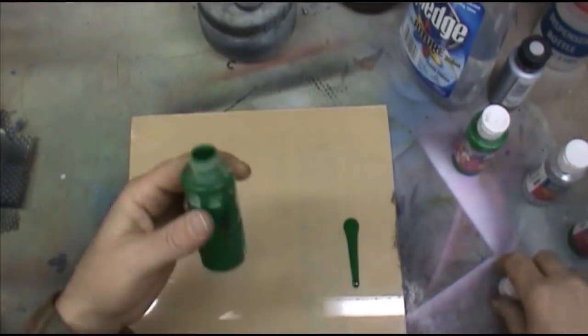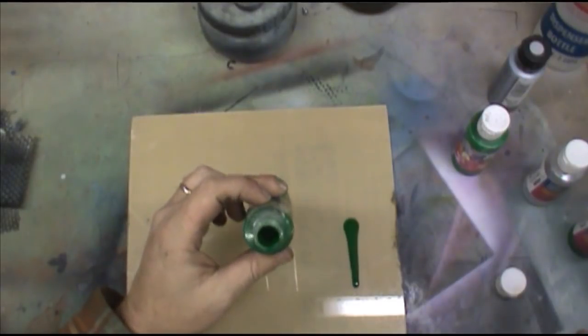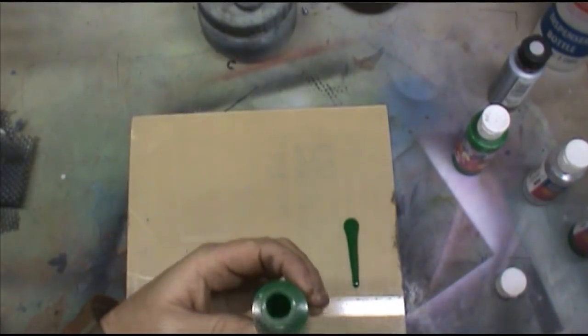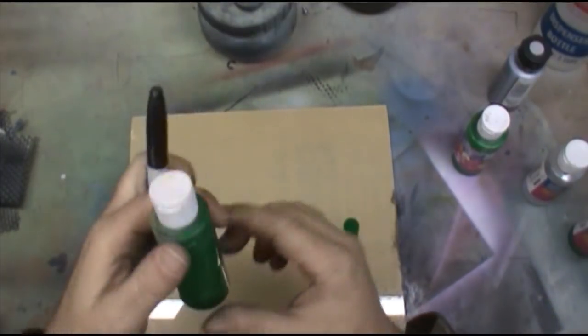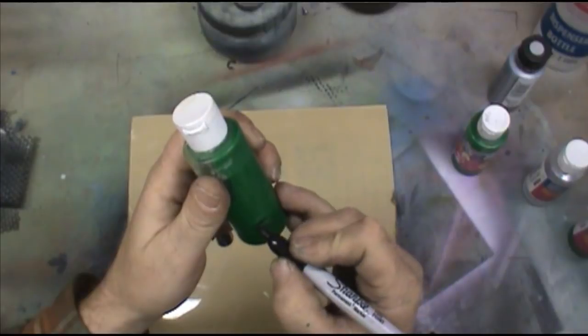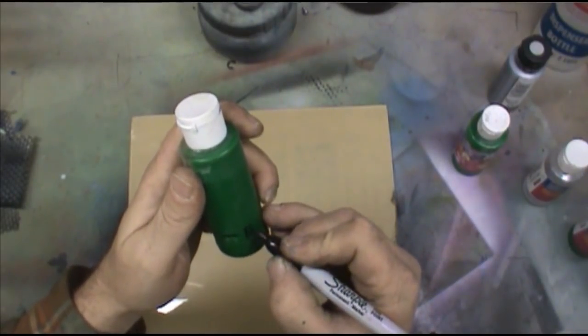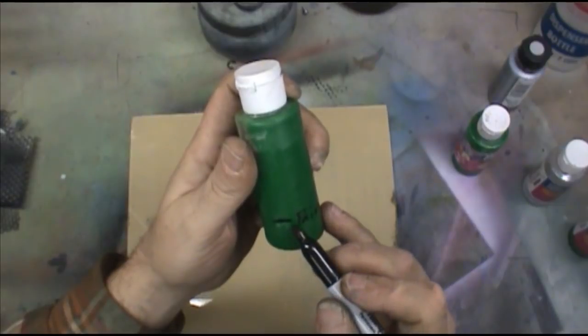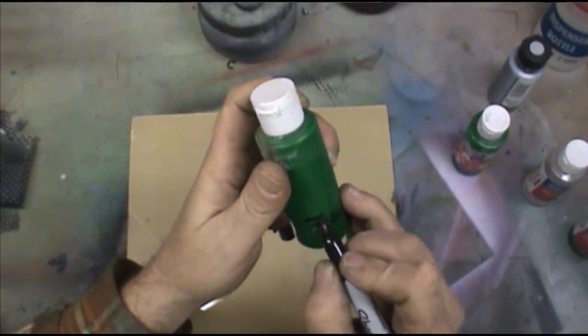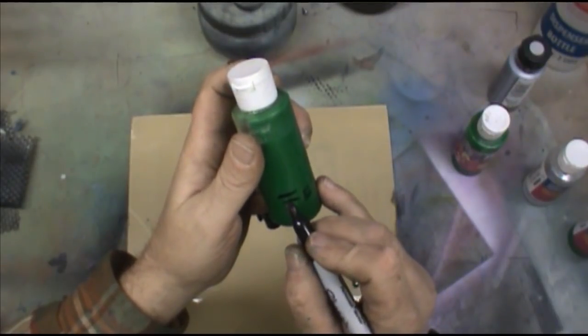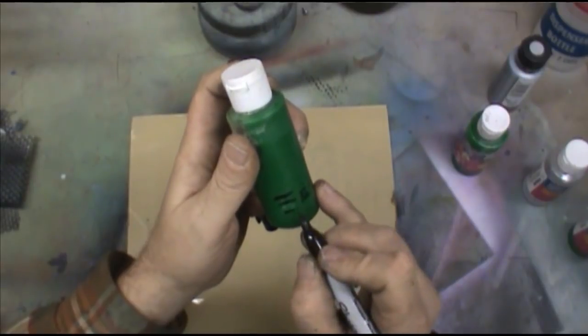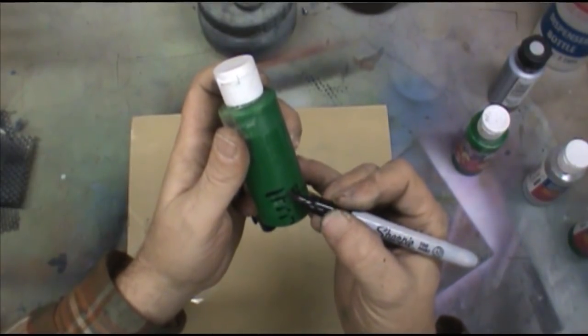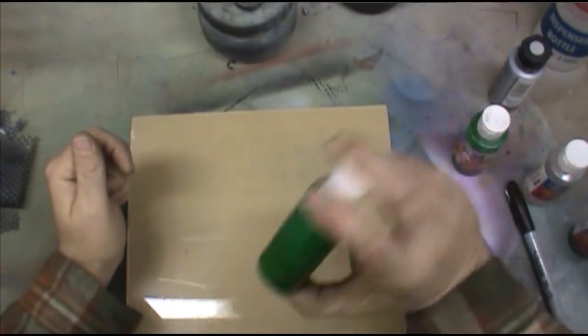So now let's mix in about one part reducer to approximately three parts paint. The paint started right about there, and now the reducer's probably right in here. Now when we say one to three, basically what that means is the distance between your reducer and your paint, you should be able to put that in here about three times. We should have one, two, three. Three parts paint, one part reducer. So let's mix this up and see what it gives us.